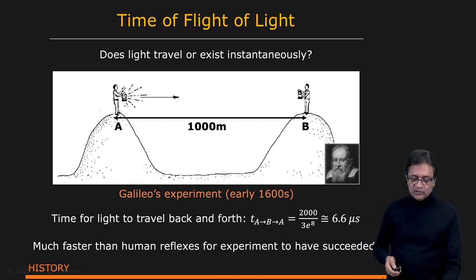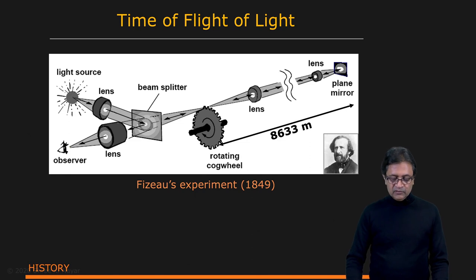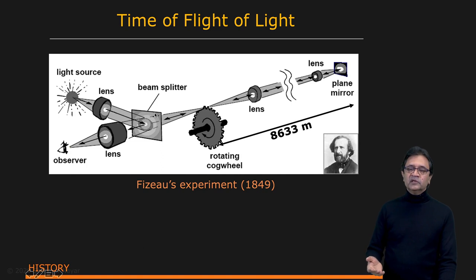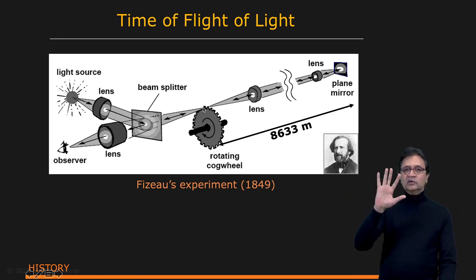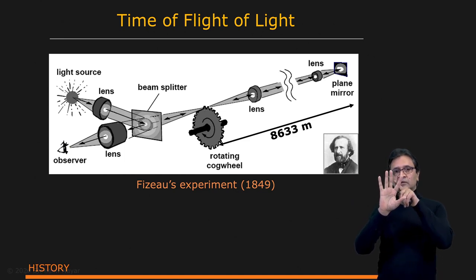Then a couple of hundred years go by and Fizeau comes along, who is a French physicist, and he constructs a truly remarkable experiment. He has an observer looking through a lens at the scene. You have a light source that goes through a lens. What you're seeing here is called a half mirror or beam splitter. It's positioned at 45 degrees and takes light from this source and reflects it in this direction, ending up focused at a point where he has what's called a cog wheel with teeth and notches.